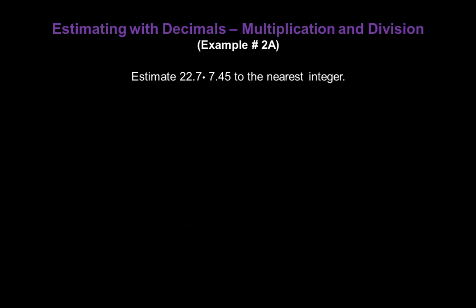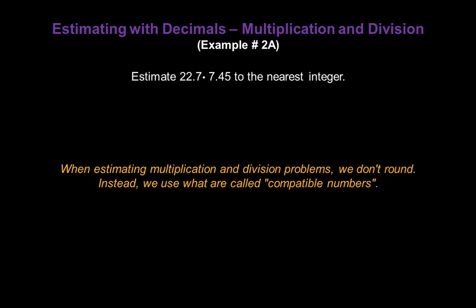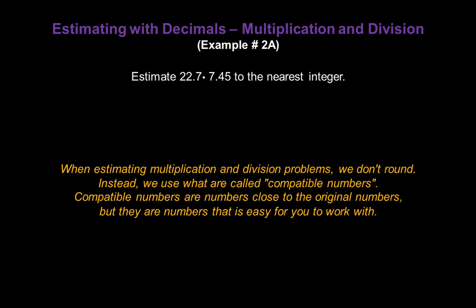Now let's estimate 22.7 times 7.45 to the nearest integer. Now when estimating multiplication and division problems, we don't necessarily round. We may end up rounding, but not necessarily. I'll show you what I mean. We're going to use something called compatible numbers. And compatible numbers are numbers close to the original numbers, but they're numbers that are easy for you to work with. The numbers that are easy for you to work with may be different than the numbers that are easy for me to work with. So we might get different estimations in our answers.